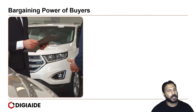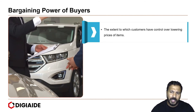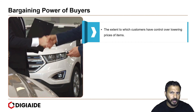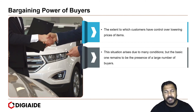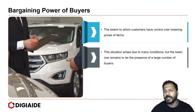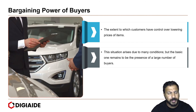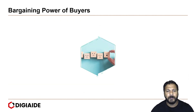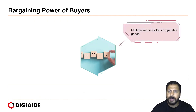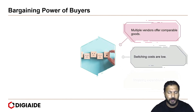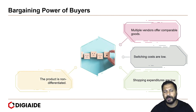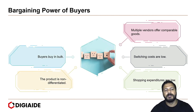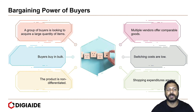And finally, let's look at the Bargaining Power of Buyers. The extent to which customers have control over lowering prices of items is known as their bargaining power. This situation arises due to many conditions, but the basic one remains the presence of a large number of buyers. Differentiated products might aid in reducing buyer bargaining power. The bargaining power of buyers is high when: multiple vendors offer comparable goods; switching costs are low; shopping expenditures are low; the product is non-differentiated; buyers purchase in bulk; and a group of buyers seeks to acquire a larger quantity of items.